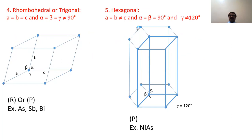The hexagonal unit cell has A equal to B, not equal to C, with alpha equal to beta equal to 90 degrees and gamma equal to 120 degrees. Only the simple primitive unit cell is possible, with lattice points at corners only. The example is NiAs.